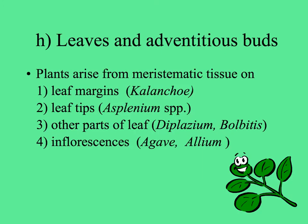Then there are plants that make plantlets — little plants arising from meristematic tissue around the edge of leaves, like in the mother of thousands, Kalanchoe; from leaf tips, like in the walking fern, Asplenium; and sometimes from other parts of the leaf or even in the inflorescences, as seen in some large monocots like agaves. Sometimes it's just a germinated bulbil, like what we saw in the onion inflorescence.